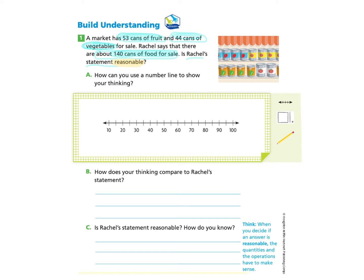Let's look at Part A, which says: how can you use the number line to show your thinking? Let's start by putting the numbers on the number line. We have 53, so 53 would be about here — I'll make a dot on the line for 53. And 44 would be about here, so I'll make a dot for 44.